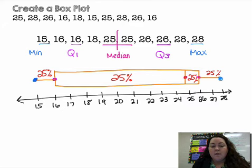And then each section accounts for 25% of the data. So 25% of my data ranges from 15 to 16. Another 25% of my data is from 16 to 25. Another 25% is from 25 to 26, and then 26 to 28. And my box makes up the middle 50% of my data. So a lot of times you'll be asked to answer questions based on the box plot after you've created it or given a box plot and then answer questions.